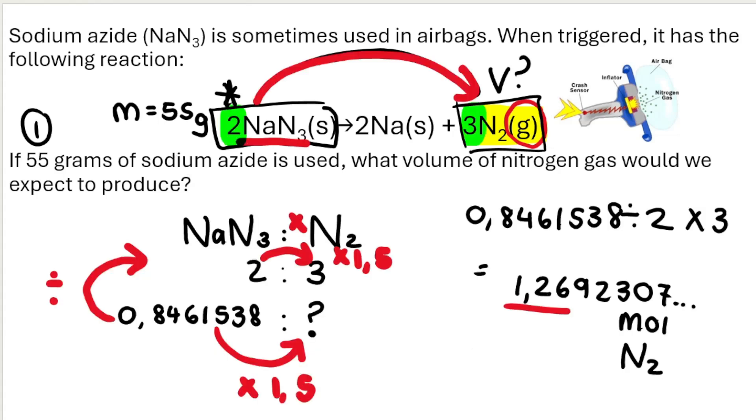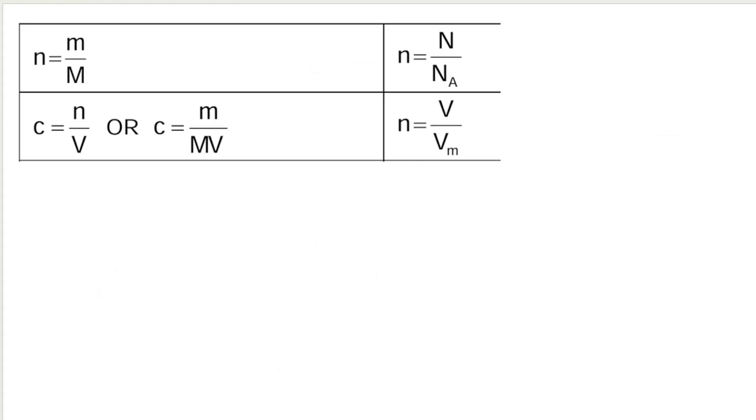And what this question actually should be saying is how much volume of nitrogen gas would we expect to produce at STP? They should say at STP. Because if I want to make use of this formula, because volume of a gas, then I need to be told the molar volume if it's not taking place at STP. And the question didn't tell me what the molar volume was.